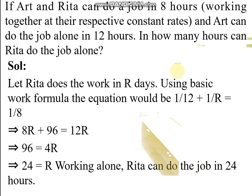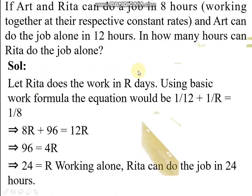Now an example problem. If Art and Rita can do a job in 8 hours working together at their respective constant rates, and Art can do the job alone in 12 hours, in how many hours can Rita do the job alone? Solution: Let Rita do the work in r days. Using the basic work formula, the equation would be 1 by 12 plus 1 by r equals 1 by 8, because both of them together can complete the work in 8 hours.